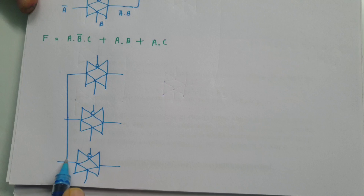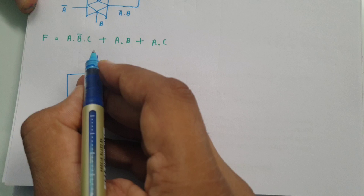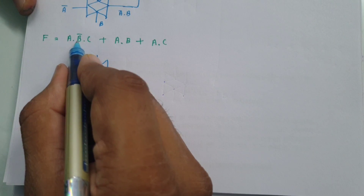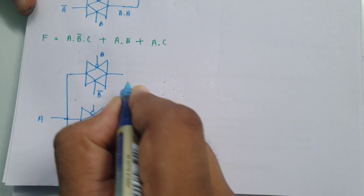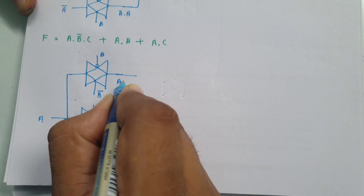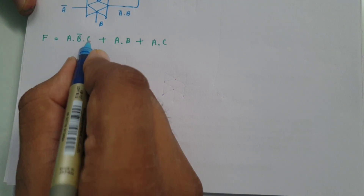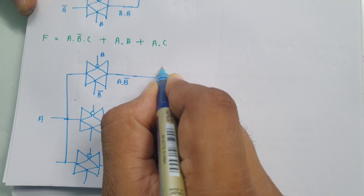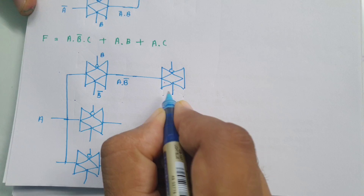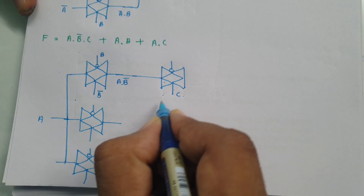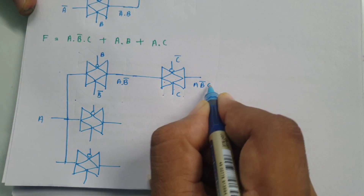Input a is common to all three transmission gates. For the first gate, the control input is b̄, so the bubble terminal should be b; this results in a·b̄. To then form a·b̄·c, one more transmission gate is connected in series, with control input c and bubble terminal c̄. The output of this chain is a·b̄·c.